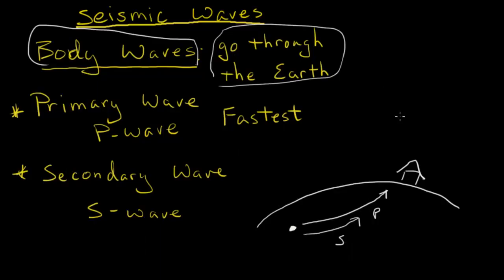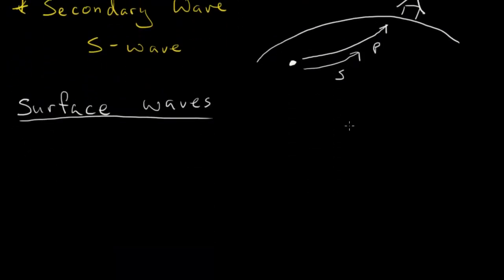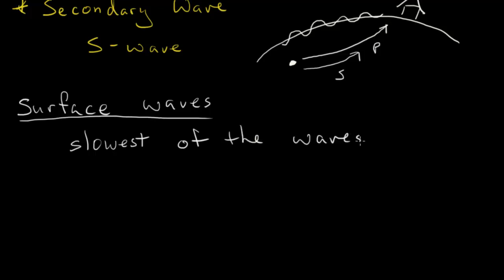The last type is the surface wave, which travels on the surface of the Earth. There are actually a couple types of surface waves. Because it travels on the surface and is also the slowest of the seismic waves, it will cause the most damage in an earthquake.